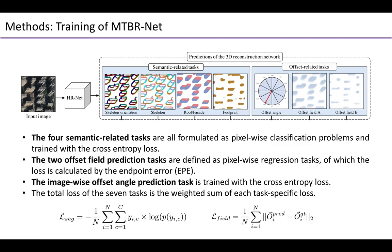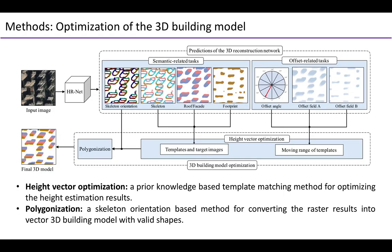The total loss of the seven tasks is the weighted sum of each task-specific loss. We further propose a 3D model optimization method that integrates the network outputs for optimizing the height estimation results and polygonization. For height vector optimization, we design a prior knowledge-based template matching method, then use a skeleton orientation-based polygonization method for converting the raster results into the final vector 3D model with valid shapes.